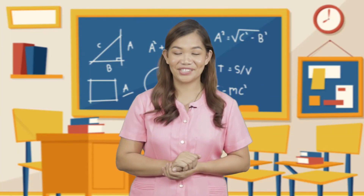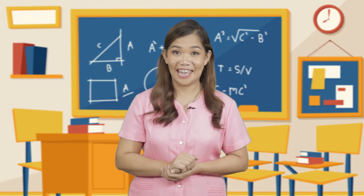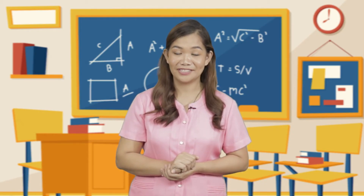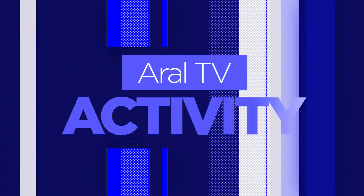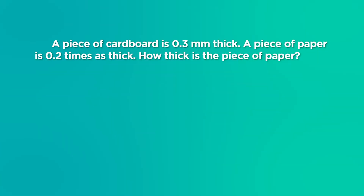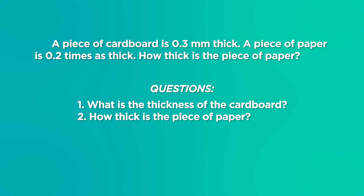Kids, let us study the problem and try to find out the answers to the questions that follow. A piece of cardboard is 0.3 mm thick. A piece of paper is 0.2 times as thick. How thick is the piece of paper? Questions: Number 1 — What is the thickness of the cardboard? And number 2 — How thick is the piece of paper?